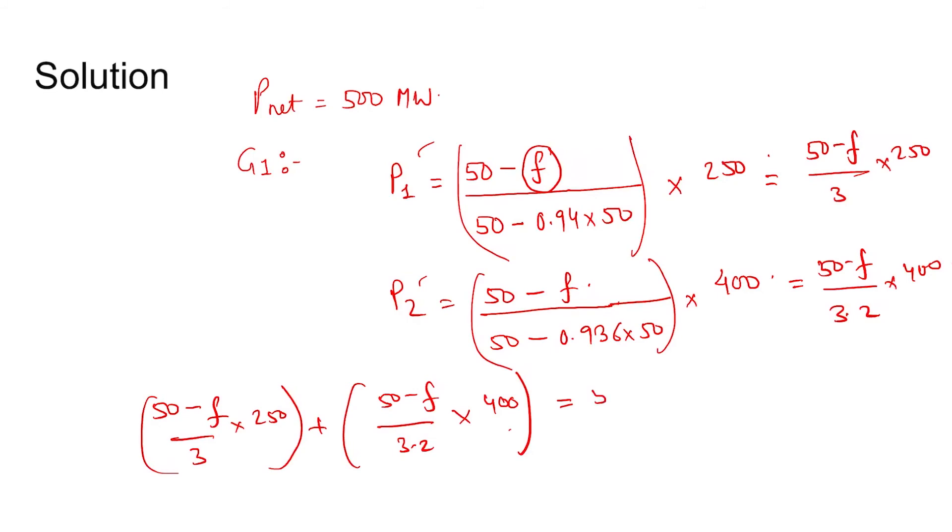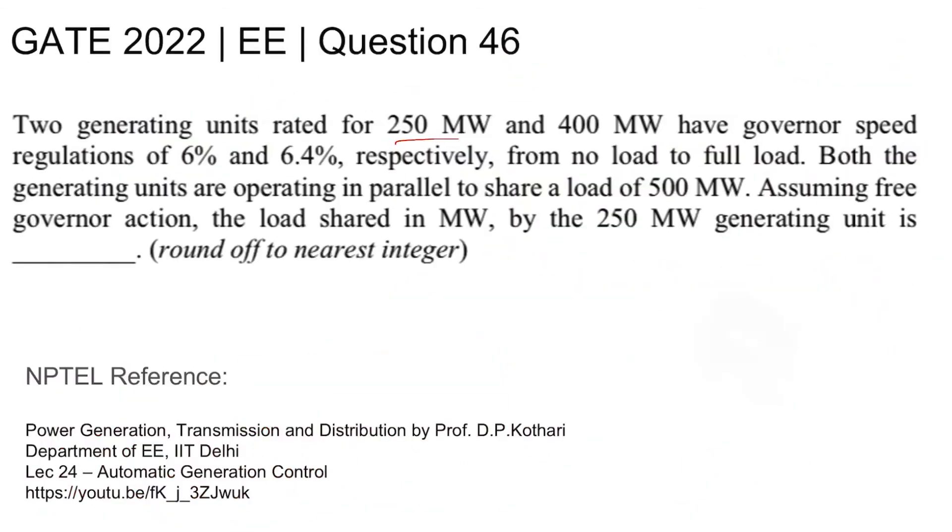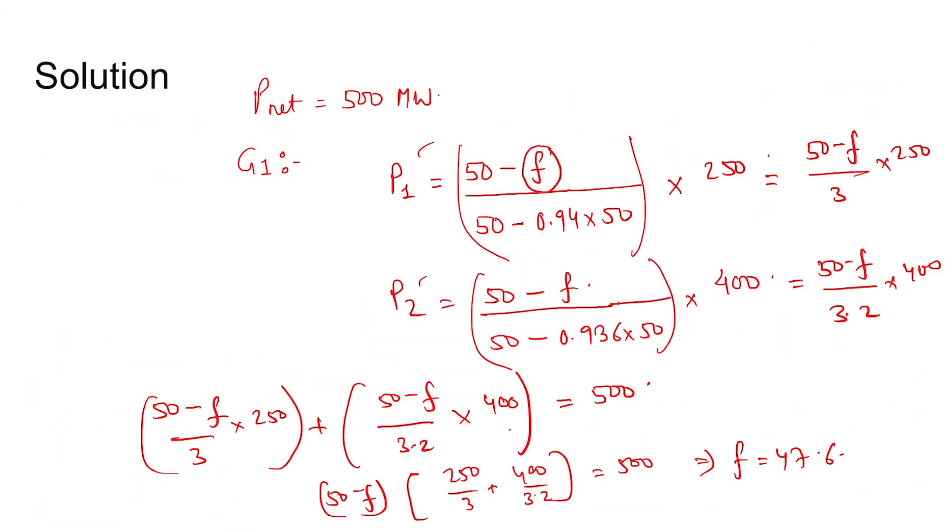Which is equal to 500, which is equal to P1 plus P2 that is 500. Taking 50 minus f common, we have 250 by 3 plus 400 by 3.2 equal to 500. f equal to 47.6.